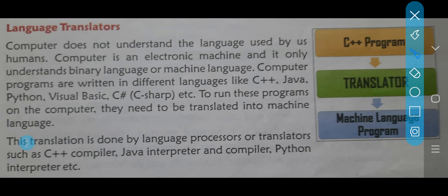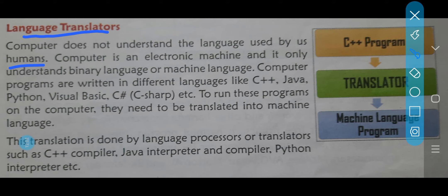Now next comes children — language translator. Now computer does not understand the language used by us, means humans. Agar aap usko simply order denge — come on, do the calculation; come on, write a paragraph; come on, write a letter — is type se agar aap bolo, jaisi main aapko commands deti hoon, jaise main bolta hoon sentence to, aap samajh jate ho and you all perform the work. Isn't it? In the same manner, if you speak to the computer, computer will never understand your language and it will never perform.